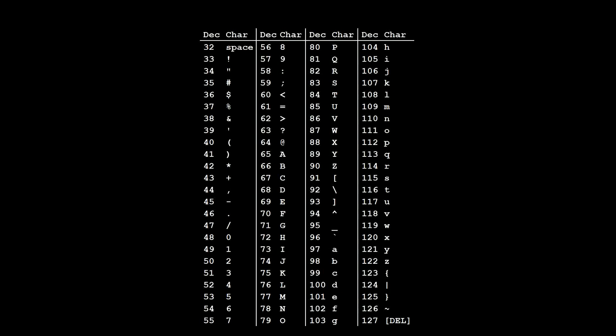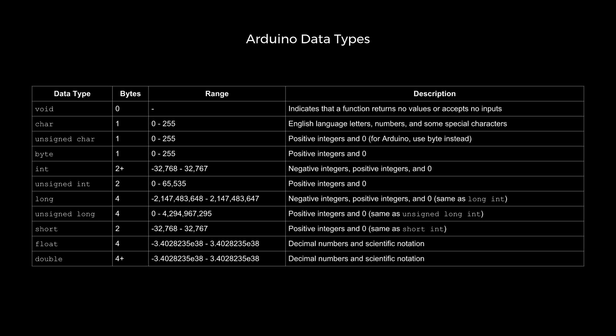While you don't need to memorize this table, it can be useful to know which values mean which characters when printing information. While there are only three fundamental types in C, keywords can be used to change how the types work. Here is a table showing some of these types and what they mean in Arduino.